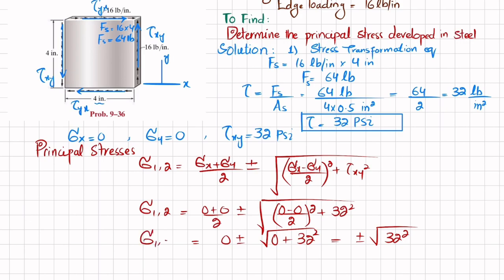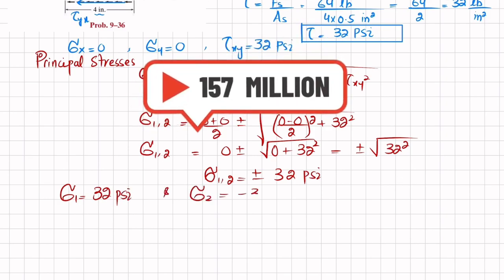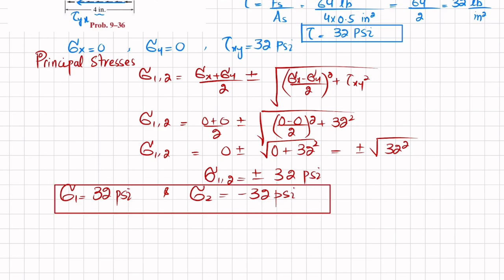This simplifies to 0 ± √(32²), giving ±32. So the principal stresses are sigma_1 = +32 psi and sigma_2 = -32 psi. These are the required principal stresses.